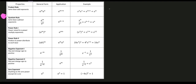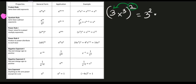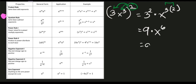Let's try example number 2: the quantity of 3x cubed raised to 2. We distribute the squared exponent to each factor. So we get 3 squared times x raised to 3 times 2. Simplifying: 3 squared is 9, and 3 times 2 is 6, giving us 9x raised to 6.